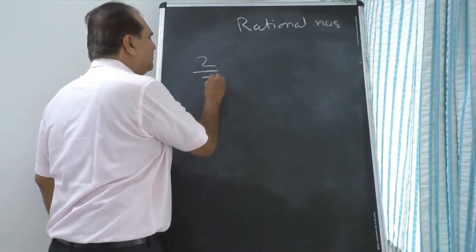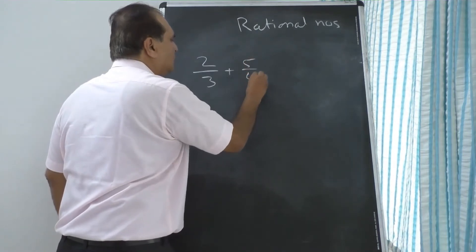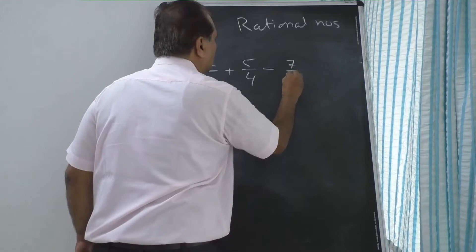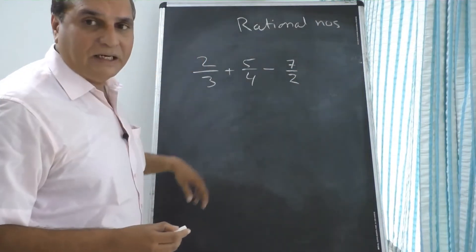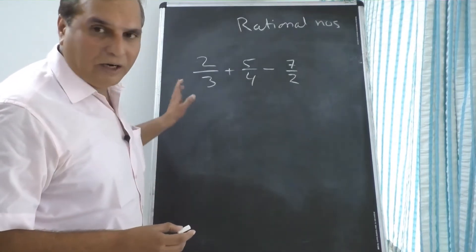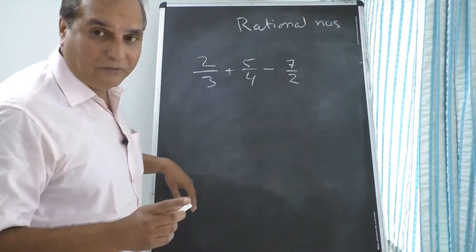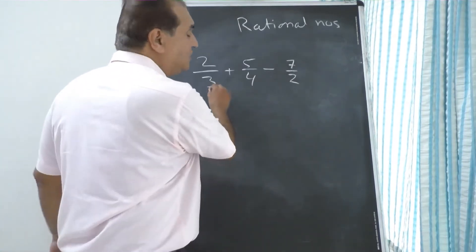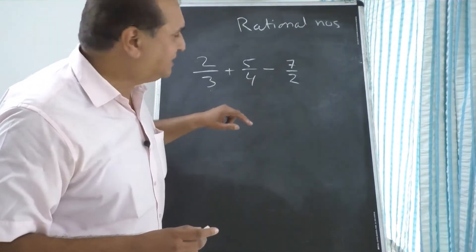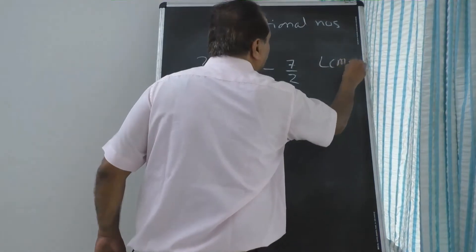Suppose 2 upon 3 plus 5 upon 4 minus 7 upon 2. Now denominators are unequal: 3, 4, and 2. You cannot add or subtract directly numerator and denominator — that mistake is quite common. Find out the LCM of the denominators 3, 4, and 2. The LCM is 12.